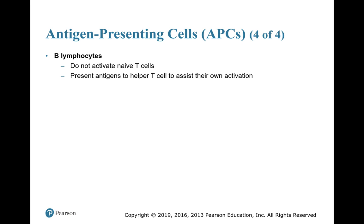B lymphocytes don't activate naive T cells. They will only activate T cells that have already seen their antigen once, but they are very good at presenting antigens to helper T cells and assisting the helper T cell. The products of that helper T cell feed back to the B lymphocyte and make it even better at doing its job.